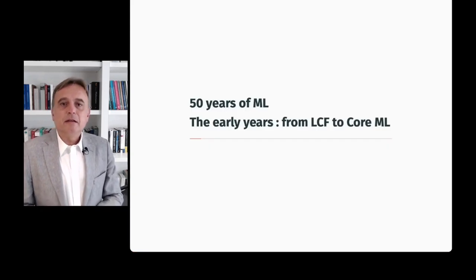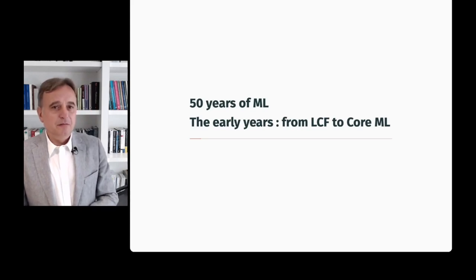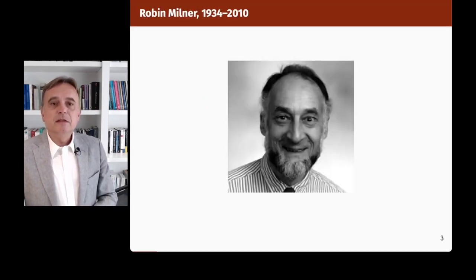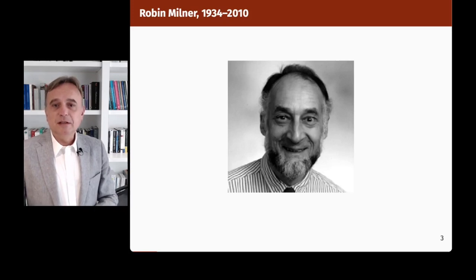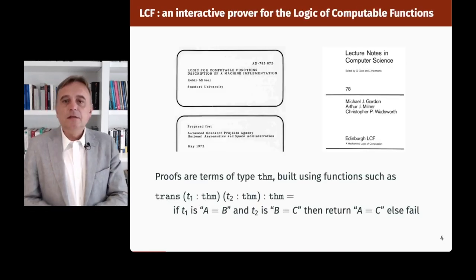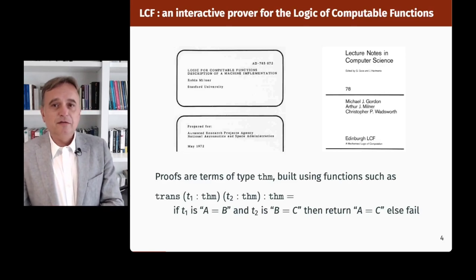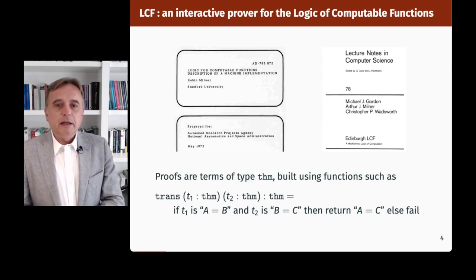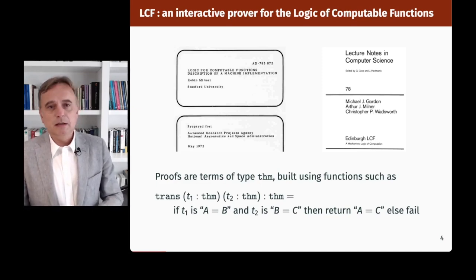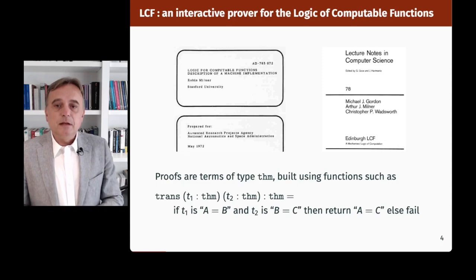Actually the story starts well before 1996. Let me move back 25 more years to the early 1970s and talk about the work of Robin Milner, perhaps the most inventive computer scientist I have ever met. In 1971-1972, Milner was working on an interactive prover for a logic, LCF, the logic of computable functions. A user would write proofs as terms — little programs of type THM, meaning a proposition that is valid. THMs would be built using functions that reflect inference rules of the logic.